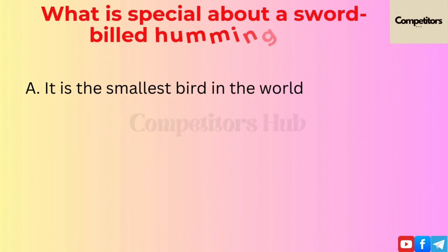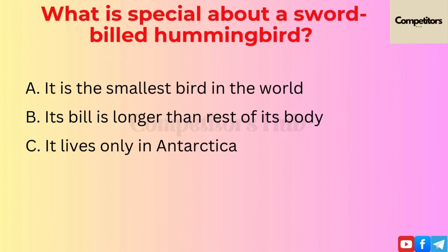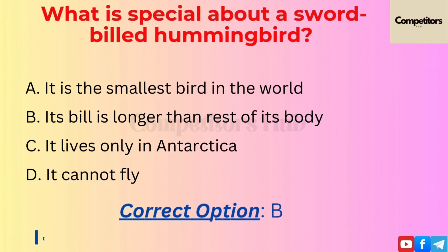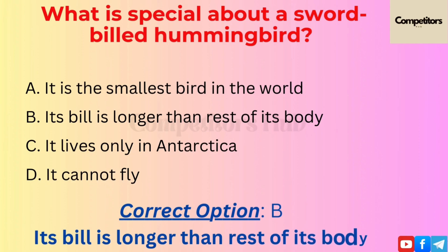The next question is: what is special about a sword-billed hummingbird? Option A: It is the smallest bird in the world. Option B: Its bill is longer than the rest of its body. Option C: It leaps only in water. Option D: It cannot fly. The correct option is B.